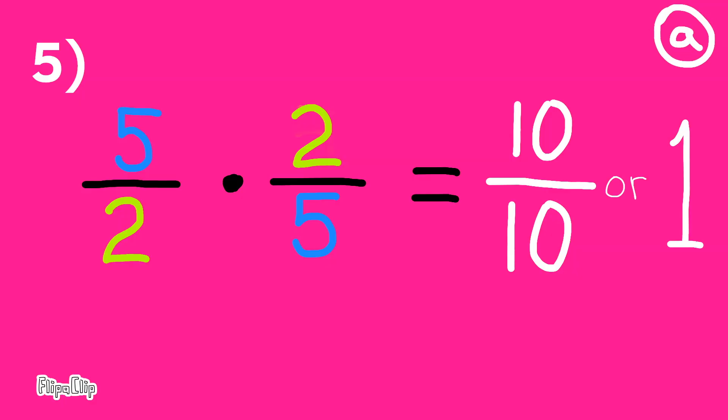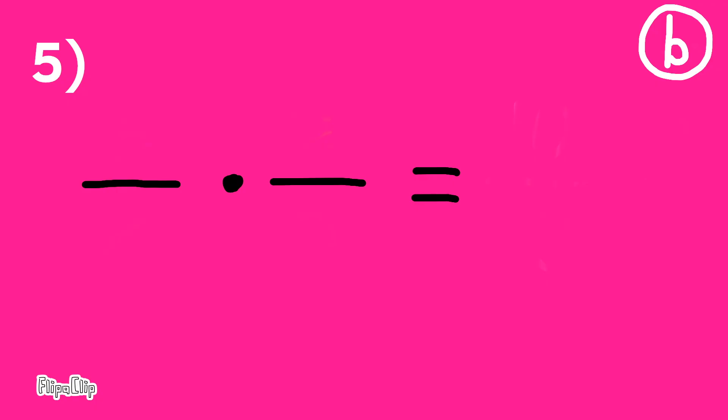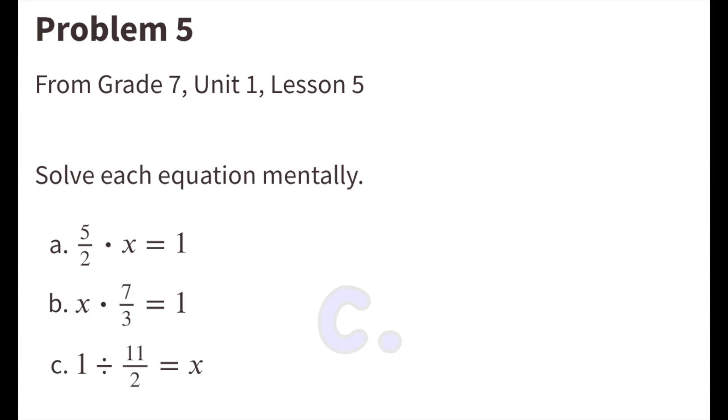Part b: x times 7/3 equals 1. 3/7 times 7/3 equals 21/21, which is the same as 21 divided by 21, or 1. Part c: 1 divided by 11/2 equals x.